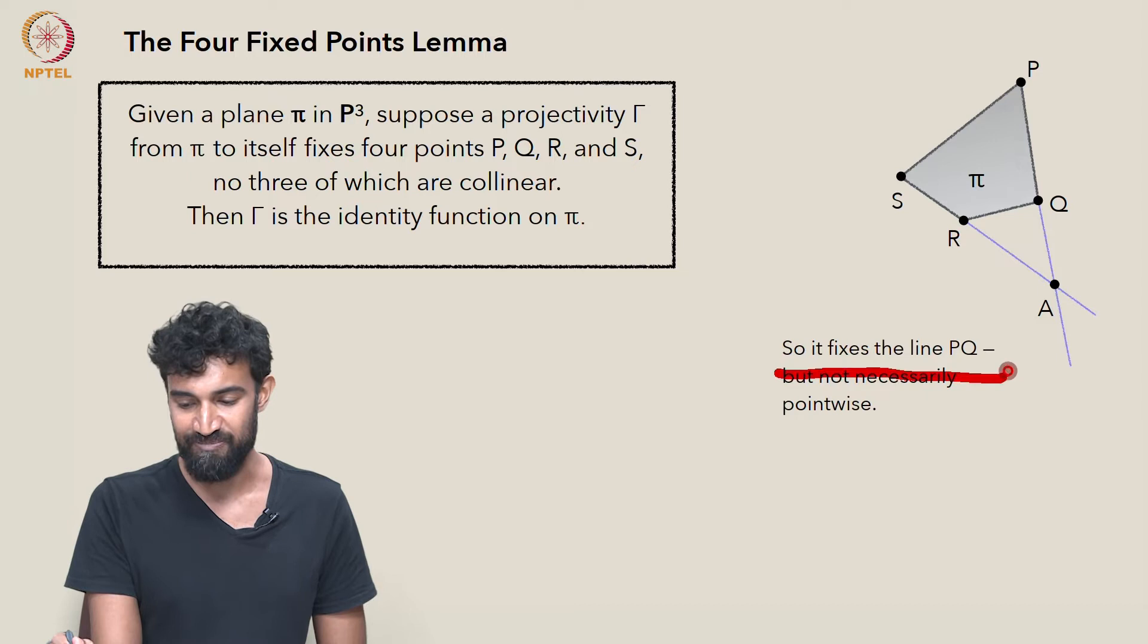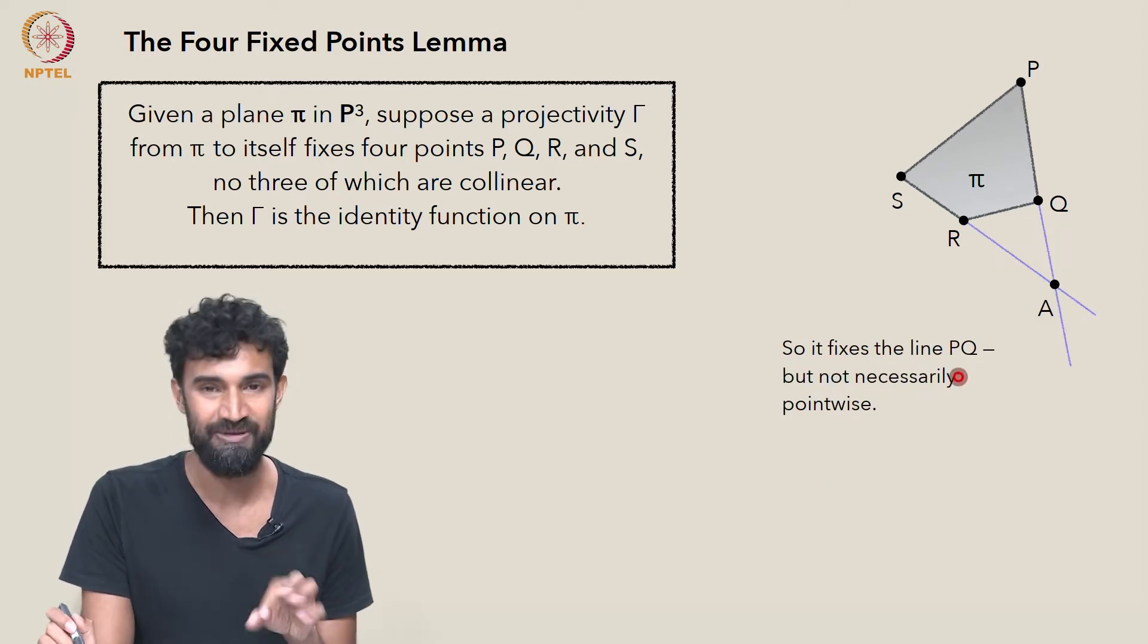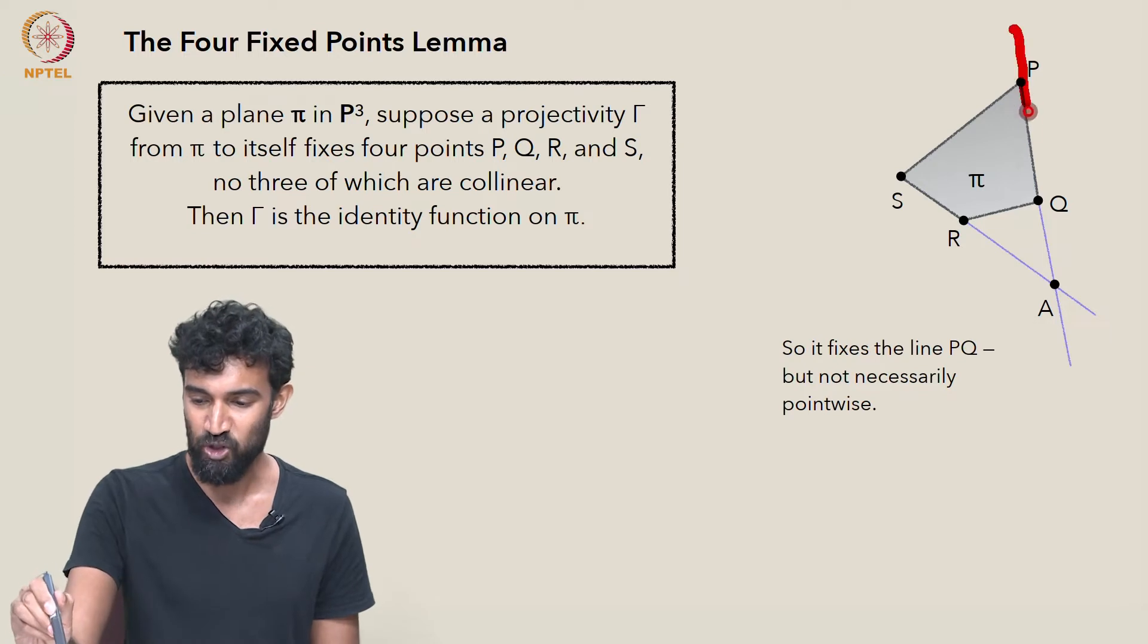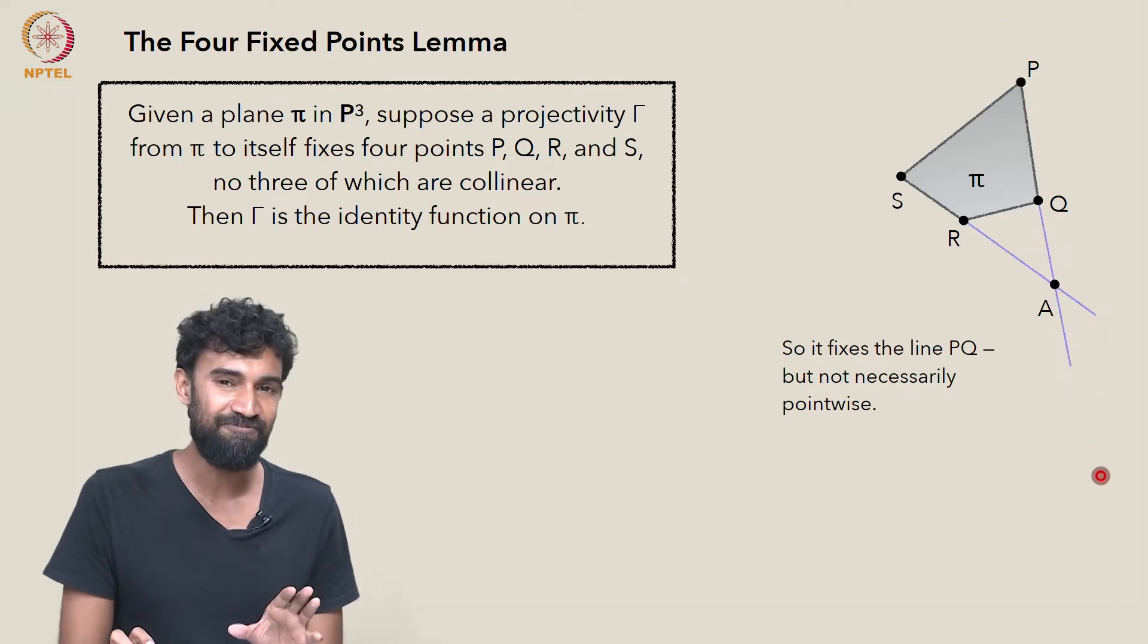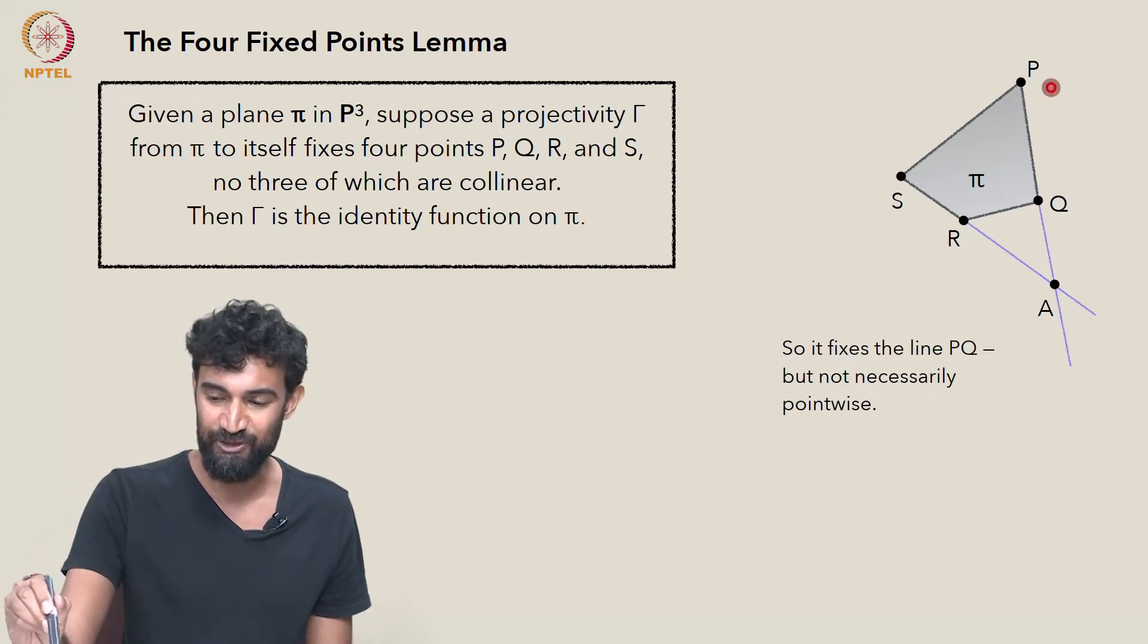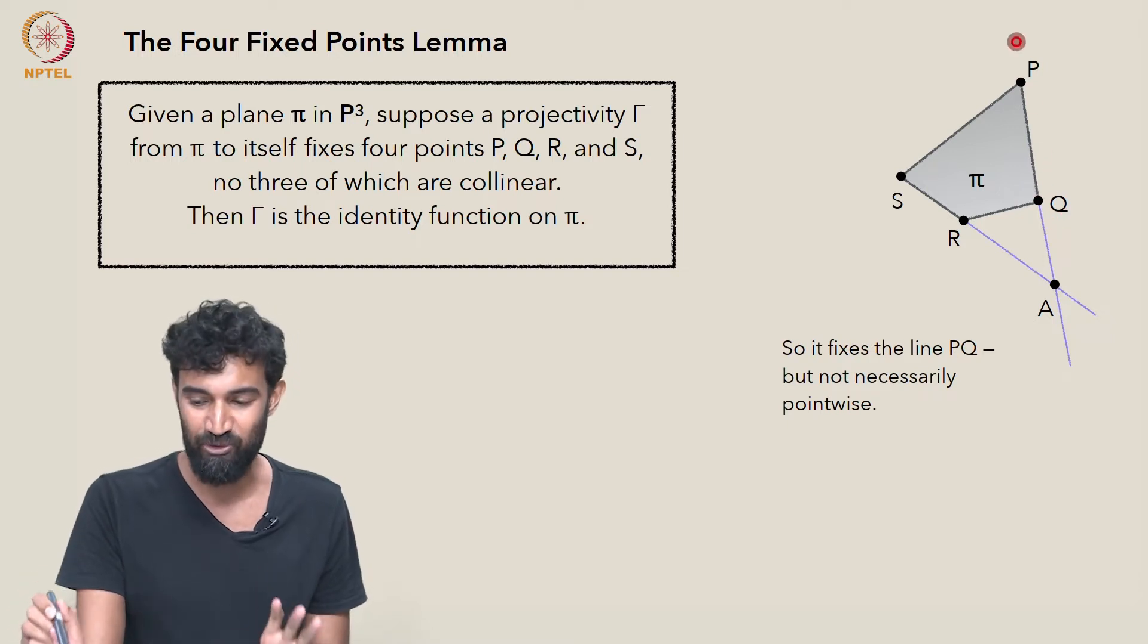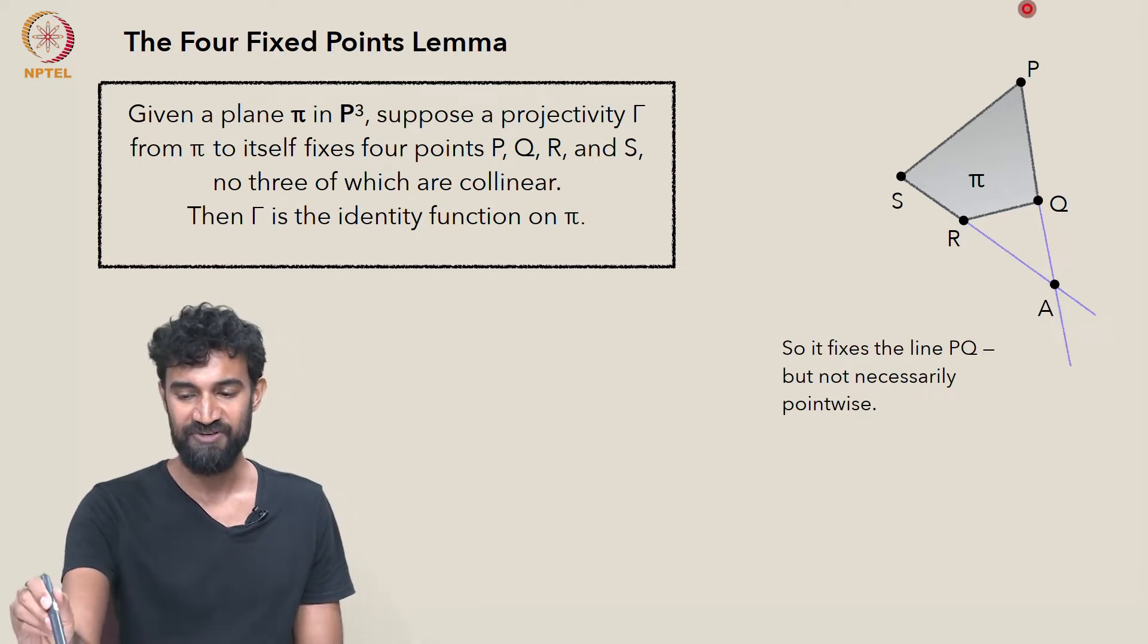γ fixes the line PQ. But we have to be careful—that terminology is ambiguous. We know it's taking this line to this line, but that doesn't mean it fixes every point in that line. It could scramble it up in various ways. We know it fixes this point and this point, but it may not fix all the other points.